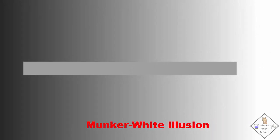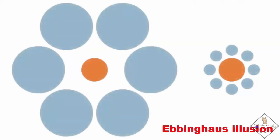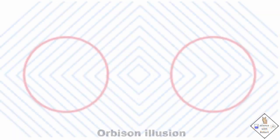This is another Munker white illusion. In this image, the horizontal gray bar is the same shade throughout the image. An Ebbinghaus illusion uses relative size perception to create an illusory effect. The orange circles are exactly the same size even though the one surrounded by the smaller circles looks larger.